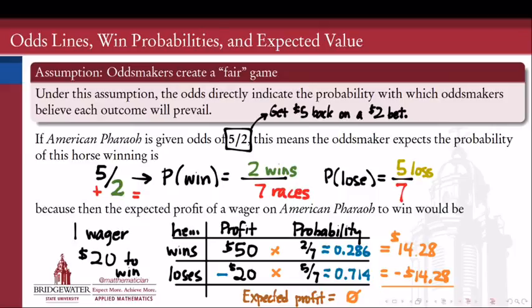So what do we decide about whether it's a good idea to bet on American Pharaoh? It's a toss-up. If my expected profit were positive, it would be a no-brainer — on average I'd actually make money. If it were negative, it would be easy to walk away. But when the expected profit is zero, mathematically we call that a fair game. It's probably not the case that odds makers design odds to be exactly fair, because they want to make a profit. But under the best assumption we have, if they were designing for a fair game, then for American Pharaoh at 5 to 2, they're imagining a two-sevenths chance of winning and a five-sevenths chance of not winning — exactly so that the expected profit would be nothing.